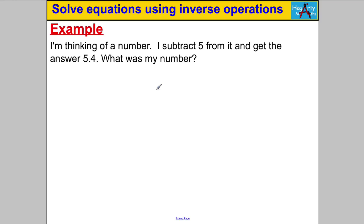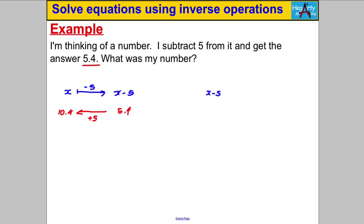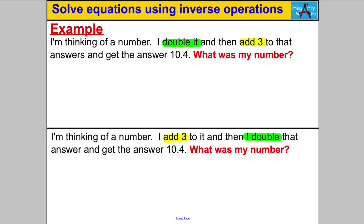Pause and have a go at this one. I'm thinking of a number — I subtract 5 to get the expression X − 5, and I'm told I get 5.4. To find the original number, I do the inverse of subtracting 5, which is adding 5: 5.4 + 5 = 10.4. In algebra, X − 5 = 5.4; adding 5 to both sides gives X = 10.4.